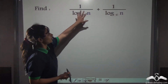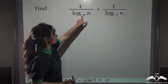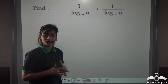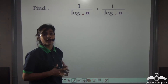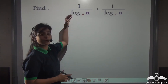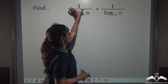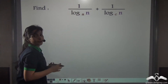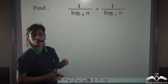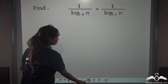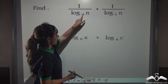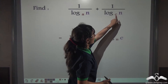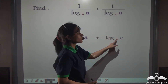Now, suppose we are given this sum: 1 by log N to the base A plus 1 by log N to the base C. If you try to do it the normal fraction addition way, it becomes very difficult. So, we will apply the reciprocal formula to take each denominator term and make it the numerator. Log N to the base A becomes log A to the base N, and log N to the base C becomes log C to the base N. This is how you convert.